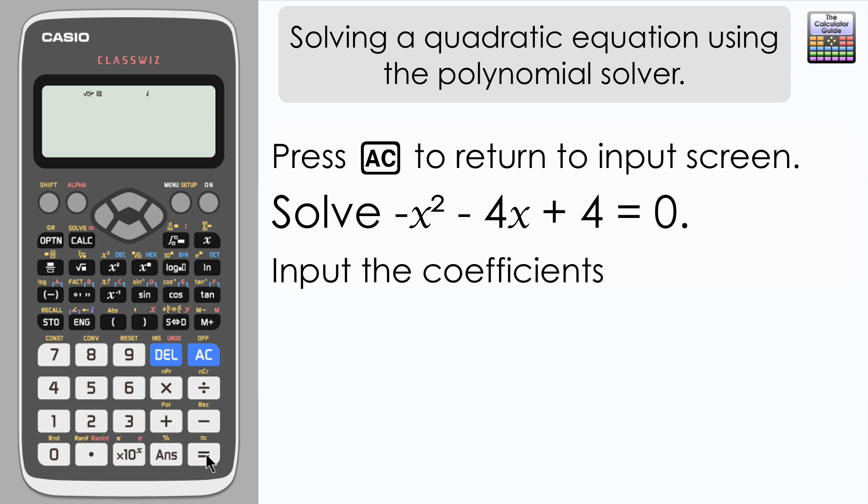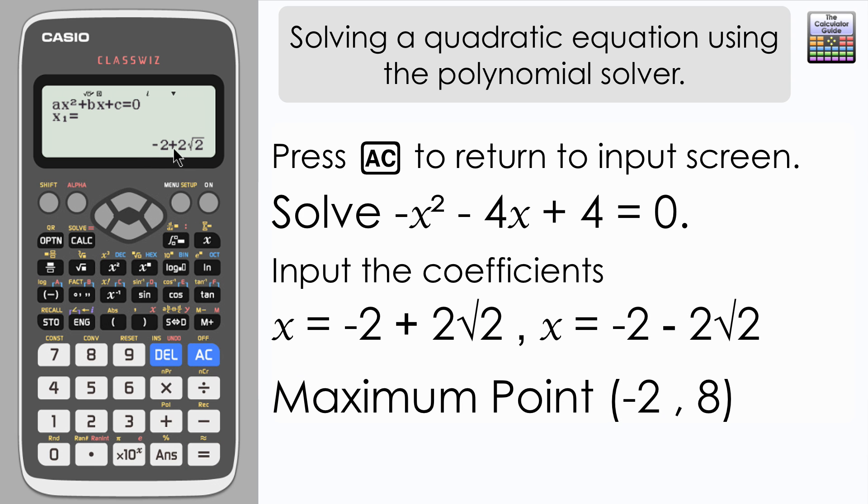So the solution has an integer and a surd part. We've got minus 2 plus 2 square root 2, and then the other solution is minus 2 minus 2 square root 2.